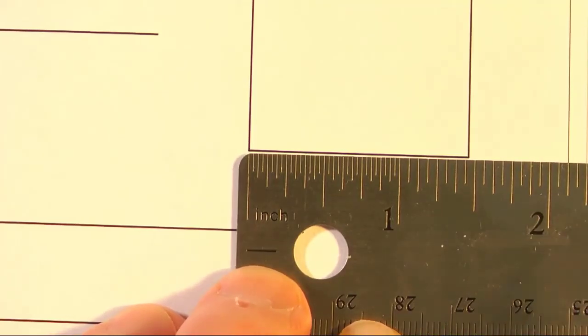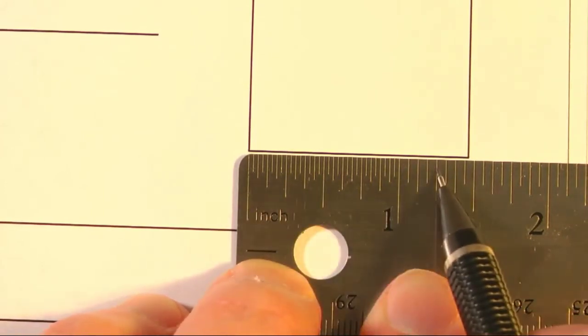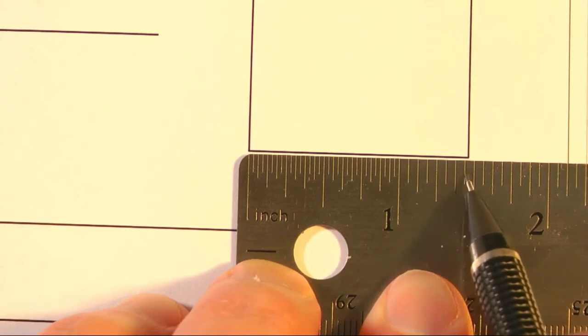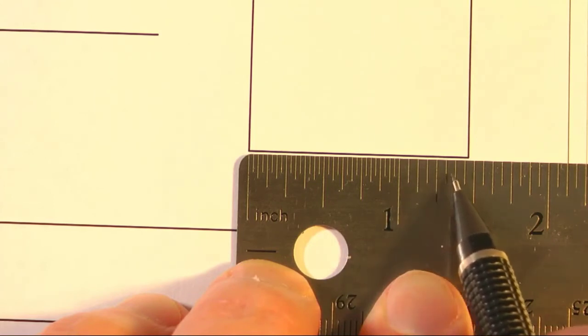Measuring a box. So now this box here, we've got one inch, a quarter, three eighths, so this would be seven sixteenths, one, two, three, four, five, six, seven sixteenths.